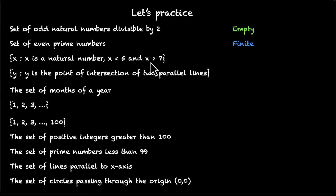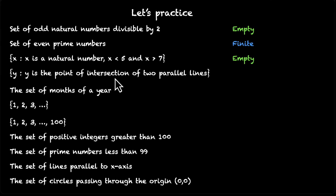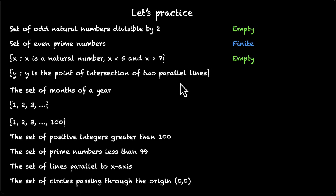We are looking for all y's where y is the point of intersection of two parallel lines. How can two parallel lines intersect? There are no points of intersection — if two lines intersected, they wouldn't be parallel. So there are zero points, which means this is an empty set.